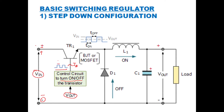The square wave has an on time and an off time. Depending on the on time and off time, you can define the duty cycle, which is equal to t_on divided by (t_on plus t_off). That duty cycle makes the transistor switch on and off.